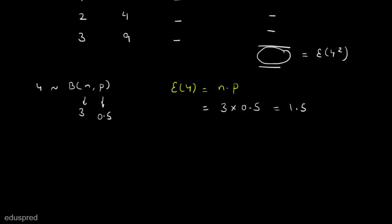Now let us also find the variance of Y. We have a formula for that as well: variance of Y equals N times P times (1 minus P). So variance of Y equals 3 multiplied by 0.5 multiplied by 0.5, which gives us 0.75.